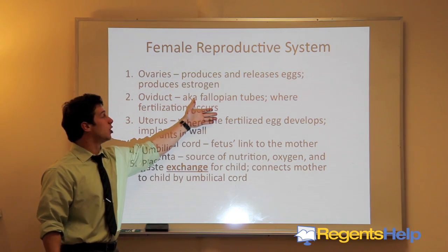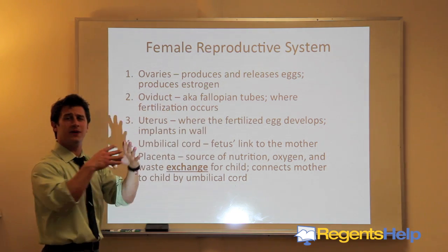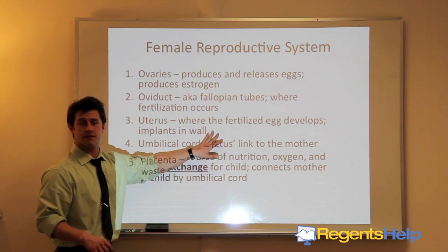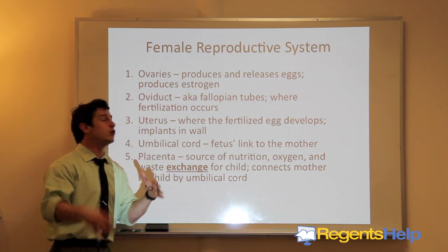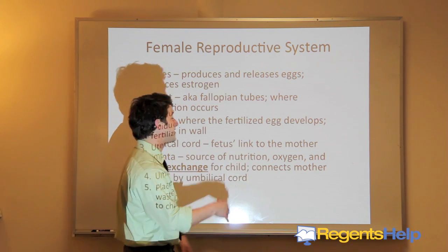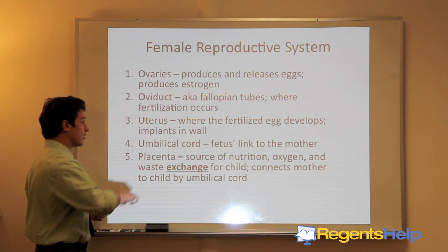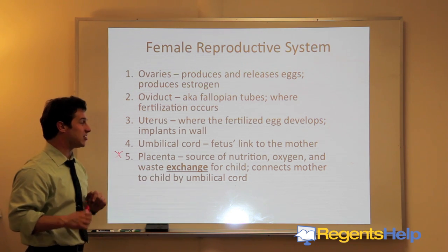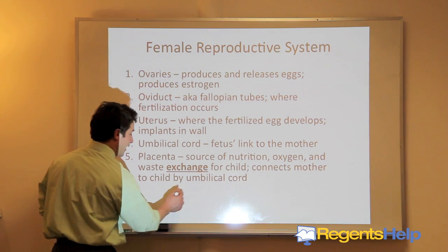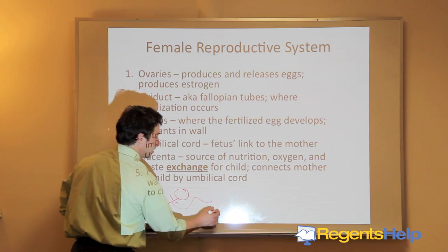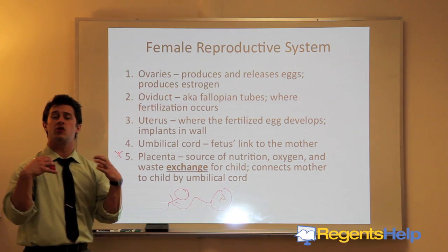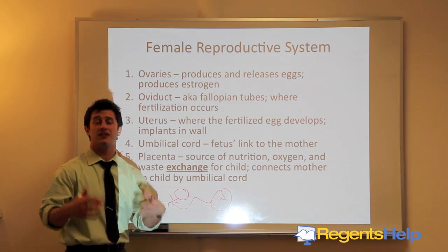The oviduct, also called the fallopian tubes, is where fertilization occurs — where the sperm meets the egg to develop a fertilized egg. The uterus is where the fertilized egg develops; it implants in the wall. Common confusion: the fertilized egg does not develop in the vagina — it develops in the uterus. The umbilical cord is the fetus's link to the mother. The placenta is a source of nutrition, oxygen, and waste exchange for the child, connecting mother to child via the umbilical cord — this is where all gas exchange, nutrients, oxygen delivery, and waste removal occur.